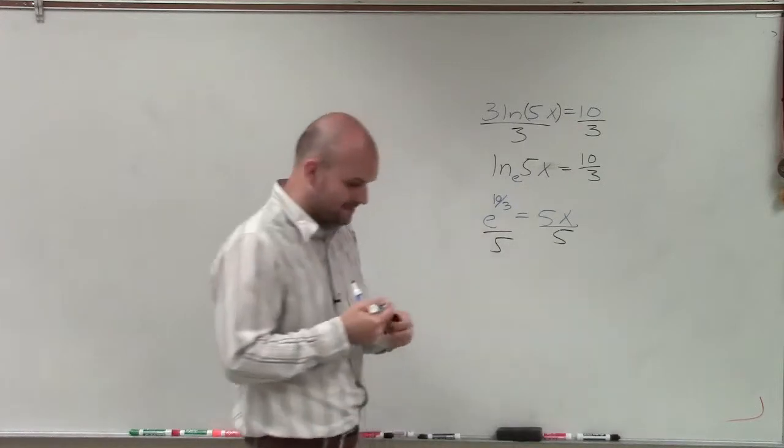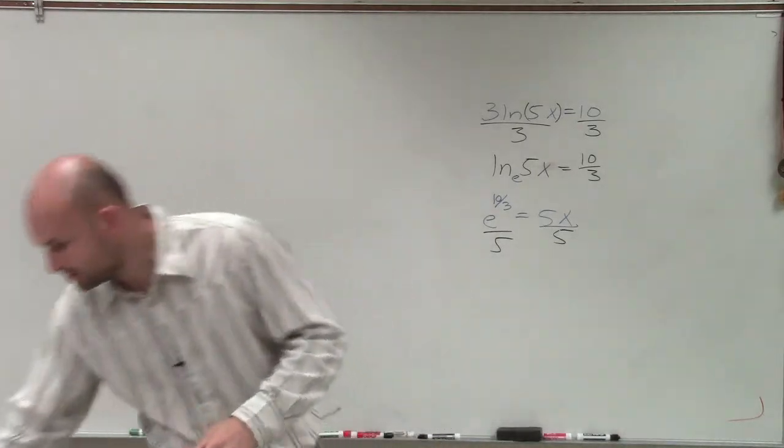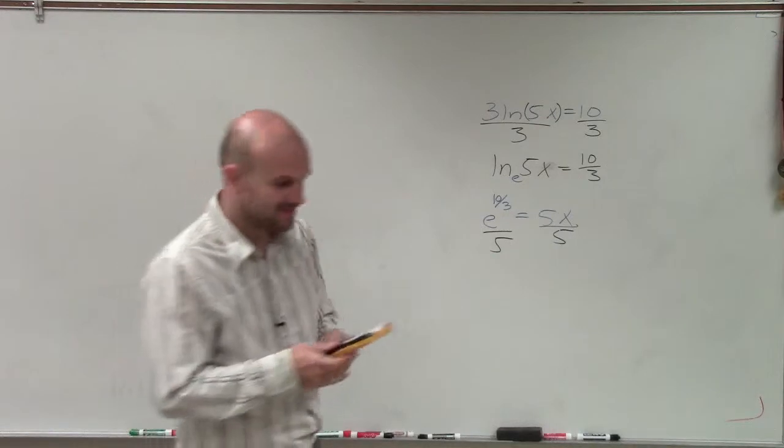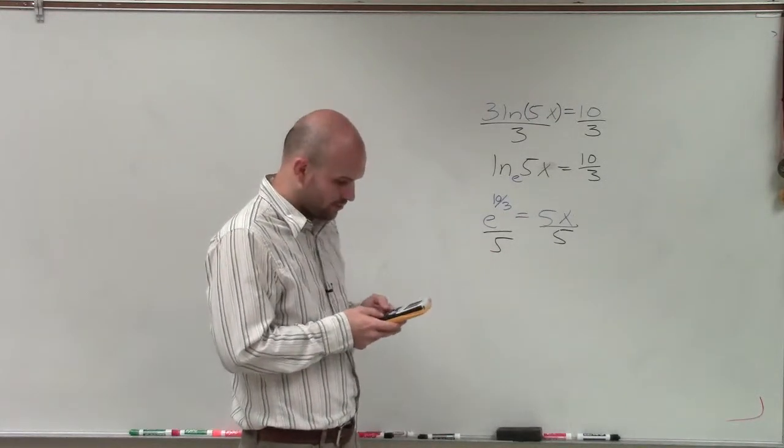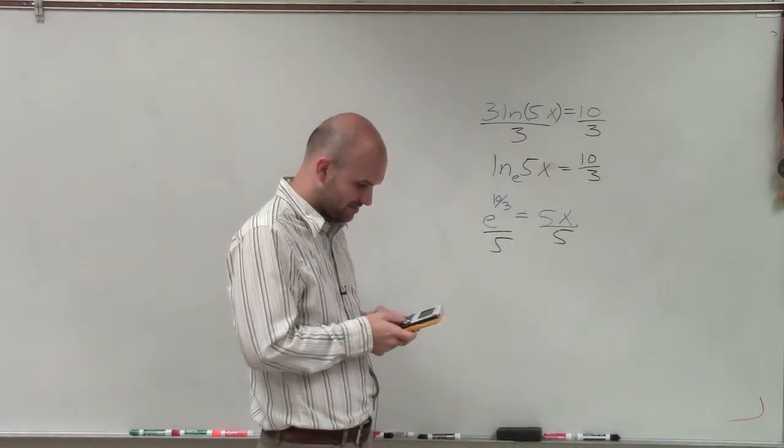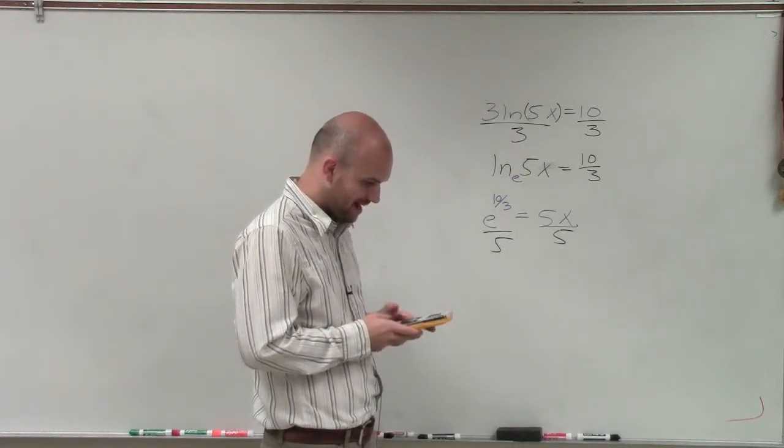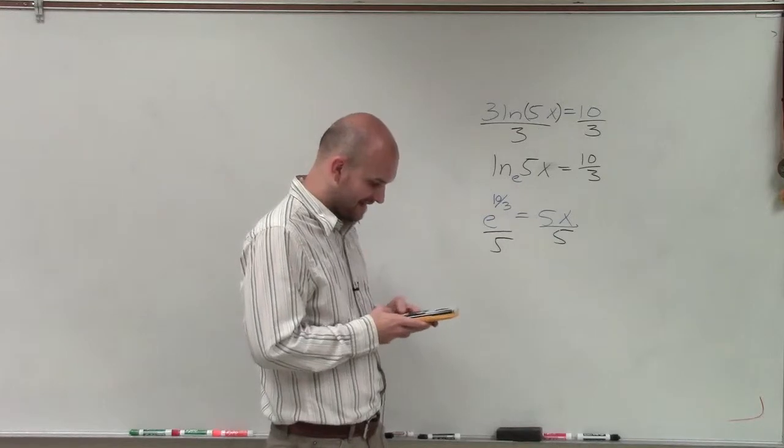Now remember, e is our irrational number that we're going to have to go ahead and compute. So I'm going to approximate this as well as I can. So I'll do e raised to the 10 divided by 3 power, and then I'm going to divide that by 5.